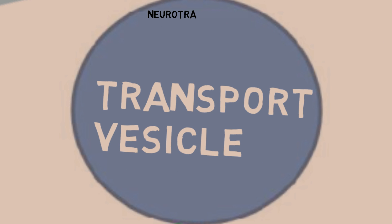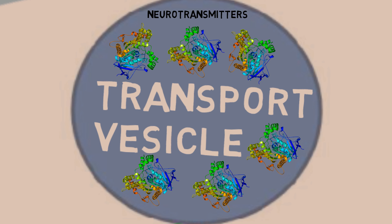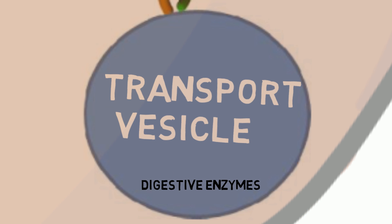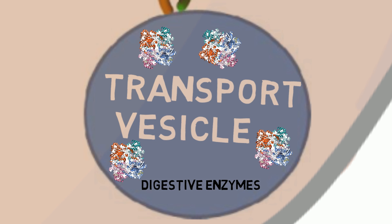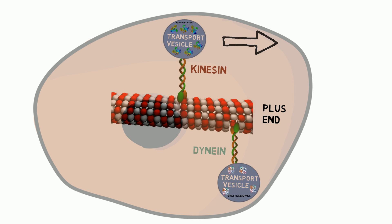Vesicles can contain proteins such as neurotransmitters or digestive enzymes. Kinesin moves towards the plus end and dynein moves towards the minus end of microtubules. This process requires energy fueled by ATP.